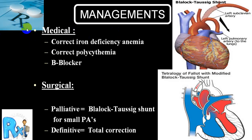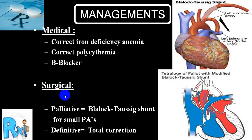As far as management: on the medical or pharmacological side — treatment of iron deficiency anemia, correction of polycythemia by phlebotomy, and beta blockers which may be helpful in some cases. Surgical treatment consists of either palliative treatment — the Blalock-Taussig shunt — or total correction.